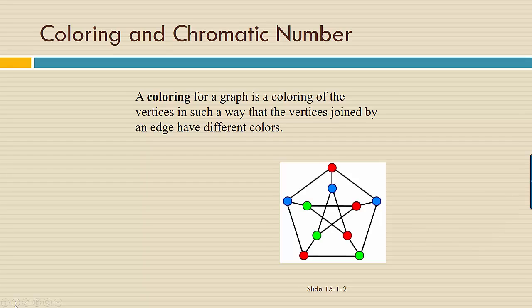A coloring for a graph is a coloring of the vertices in such a way that the vertices joined by an edge have different colors.